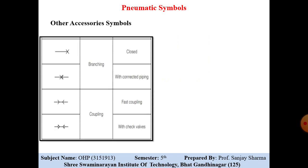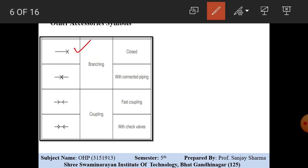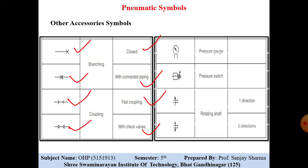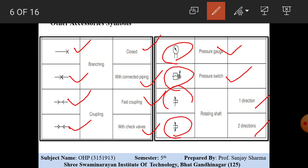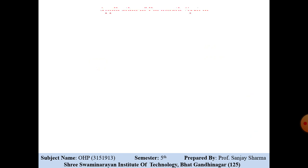Other accessory symbols include branching — closed and with connected pipe — and coupling, which is a fast coupling with check valve. Some of these symbols are also similar to those of the hydraulic system. The pressure gauge symbol and pressure switch are shown. One-directional rotation and two-directional rotation symbols show the rotation of the motor or the compressor.